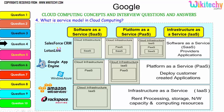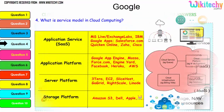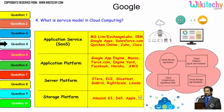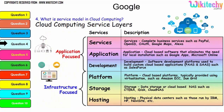Examples for SaaS include Lotus Live and Salesforce CRM. For PaaS it's Windows Azure and Google App Engine. For IaaS you have Amazon Web Services and Rackspace hosting. The important service layers are services, application development, platform, storage, and hosting. These are some typical examples under each service category and are important topics that will be asked in cloud computing interviews.